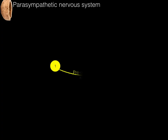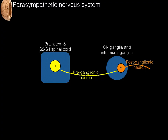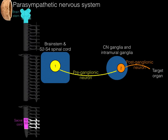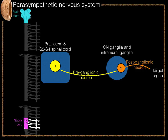So, parasympathetic innervation in a nutshell: we have preganglionic neurons that synapse with postganglionic neurons. The preganglionic neurons arise from the brainstem and sacral spinal cord, and the postganglionic neurons arise from cranial nerve ganglia and intramural ganglia, with the synapse made at the target organ. There's the brainstem and there's the sacral cord — that's parasympathetic innervation in a nutshell.